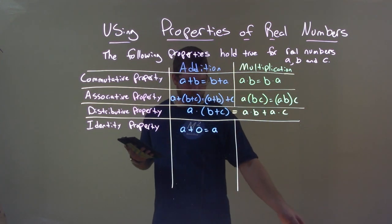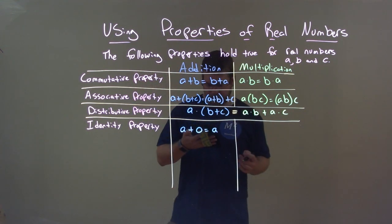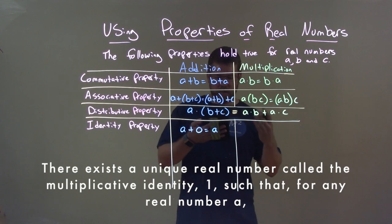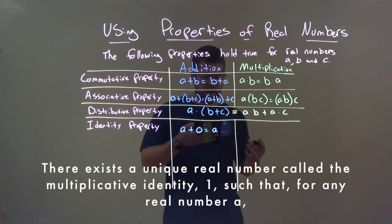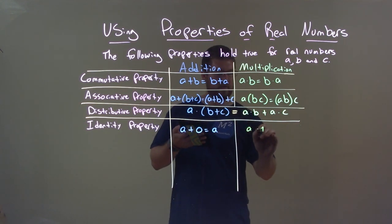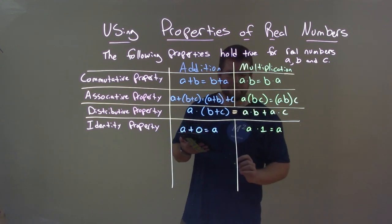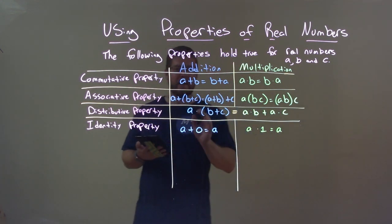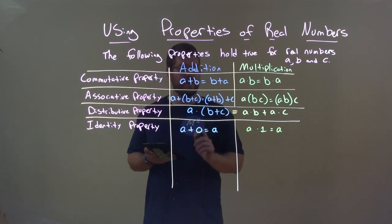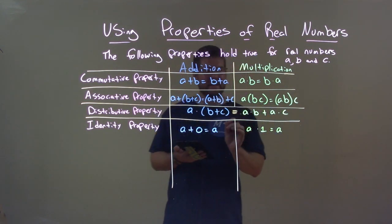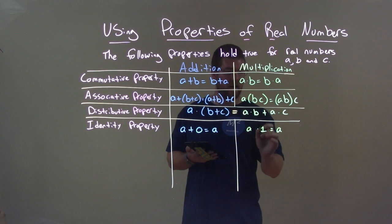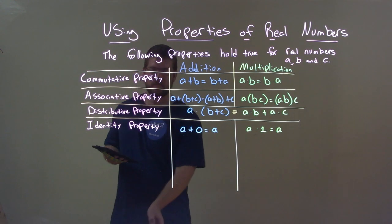There is also an identity property for multiplication. There exists a unique real number called the multiplicative identity — one — such that for any real number A, A times one equals A. The additive identity is zero; A plus zero equals A. The multiplicative identity is one; A times one equals A. It basically just doesn't change anything when you do that operation.